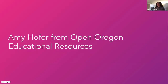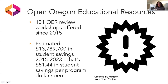Thanks, Jim. I'm Amy Hoffer from Open Oregon Educational Resources. We have done 131 OER review workshops since 2015, and using the OEN's $100 multiplier, we estimate that students have saved over $13 million since then — that comes out to over $50 in student savings per program dollar spent. That's a much higher ratio than anything else we do in our program. So when people ask if it's worth it to join the OEN, I always say yes — if you have some funding, do this. It's been really effective in Oregon.